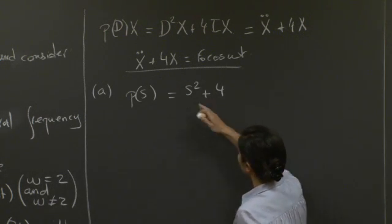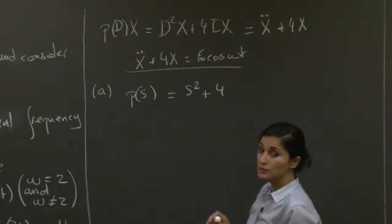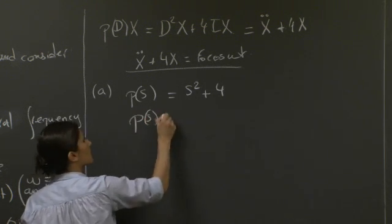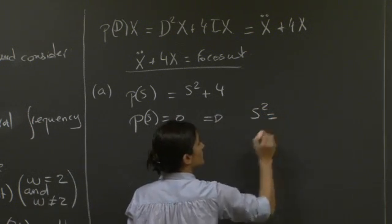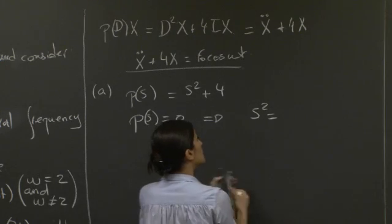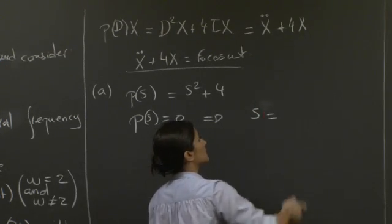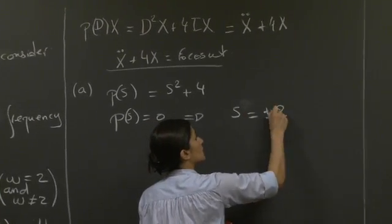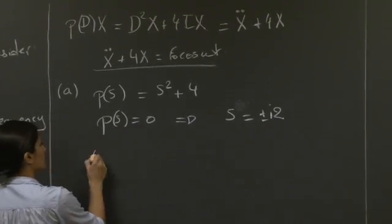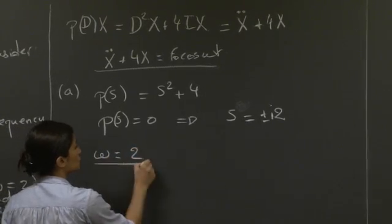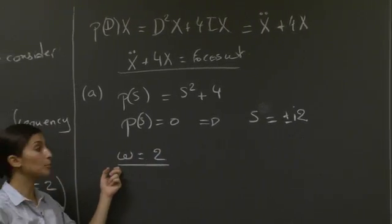basically, we get complex solutions, which is the case here. So the natural frequency of this system would be omega equals 2, because we only consider frequencies that are positive here.